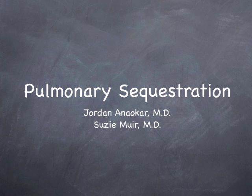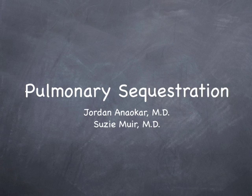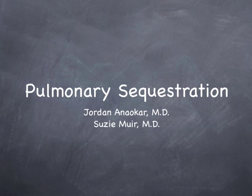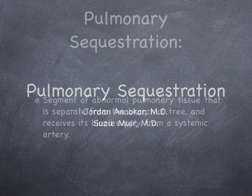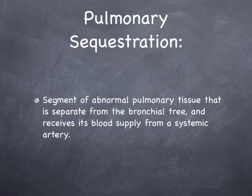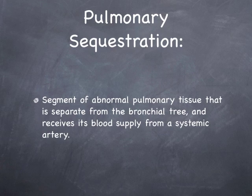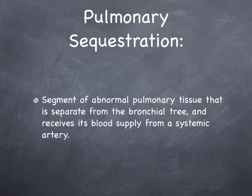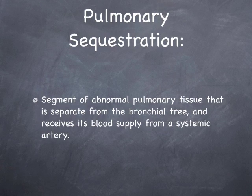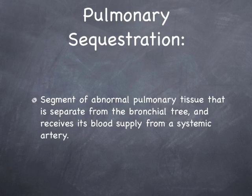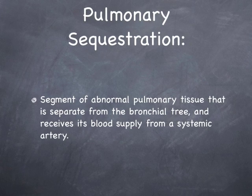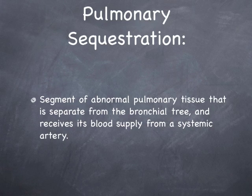Hello, this is Jordan and Nauker, and today I will be presenting a short podcast on pulmonary sequestration. This will be the first section in a larger series on congenital chest anomalies. Pulmonary sequestration is a segment of lung parenchyma that does not have a normal connection to the bronchial tree, and it receives its blood supply from a systemic artery rather than a pulmonary arterial branch.